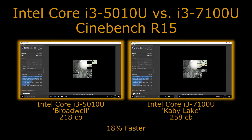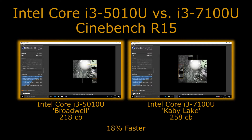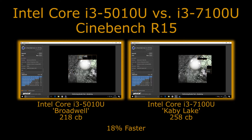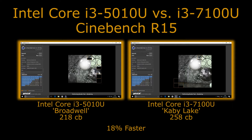Here we can see that between the two generations of chips there's an 18% performance difference. That's a combination of clock speed increases with Kaby Lake and also the microarchitecture improvements between the 5th and 7th generation. So while we're in the same 15 watt power budget, and both of these chips are on a 14 nanometer process, there have been some reasonable gains in pure CPU performance through the generational changes in the microarchitecture.